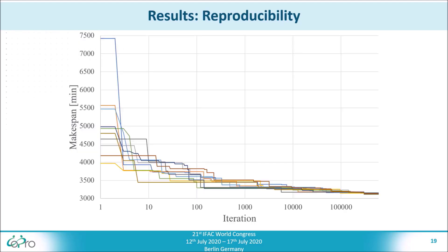As simulated annealing is a stochastic optimization algorithm, the reproducibility of the results has to be evaluated. Here you can see the evolution of the best solution for 10 different optimization runs. Even though the objective values of the initial solutions vary, all of the runs converge to a similar final solution in the end.